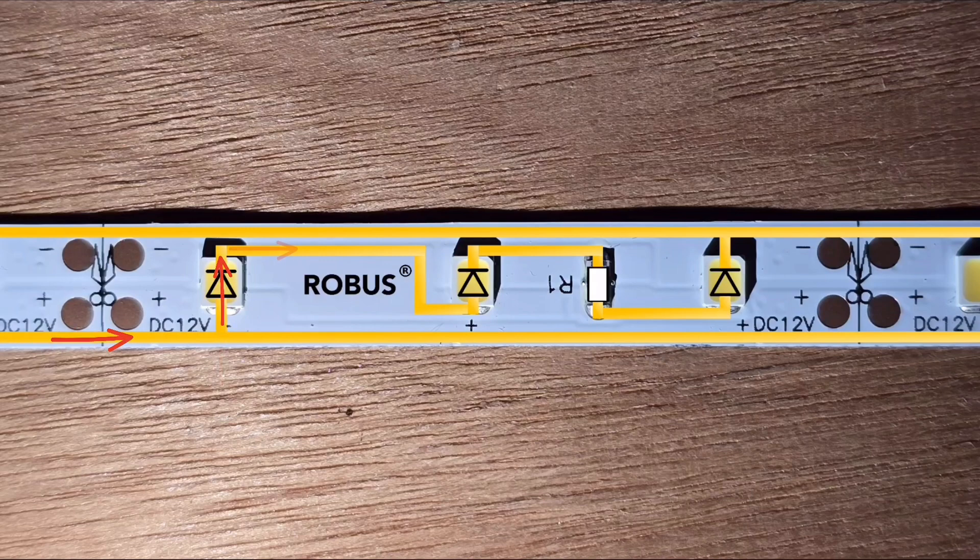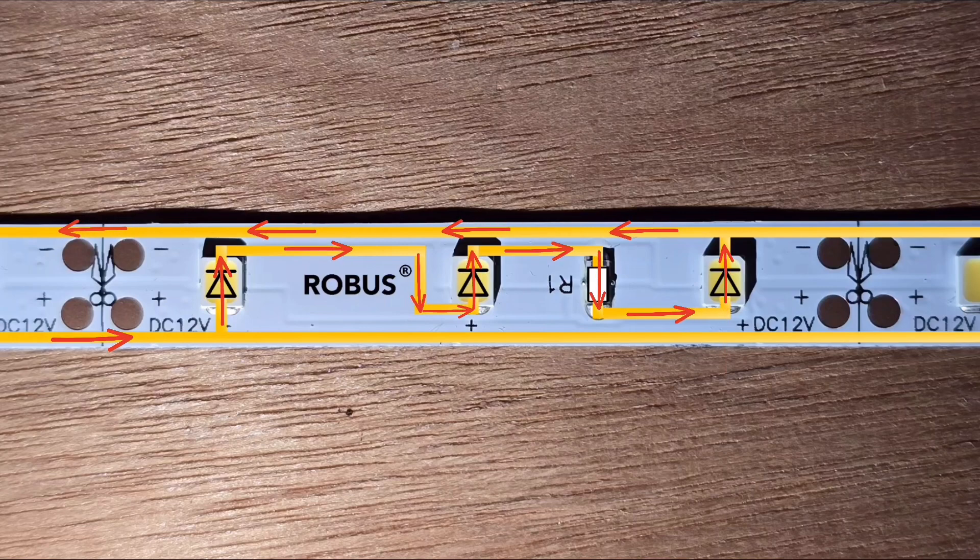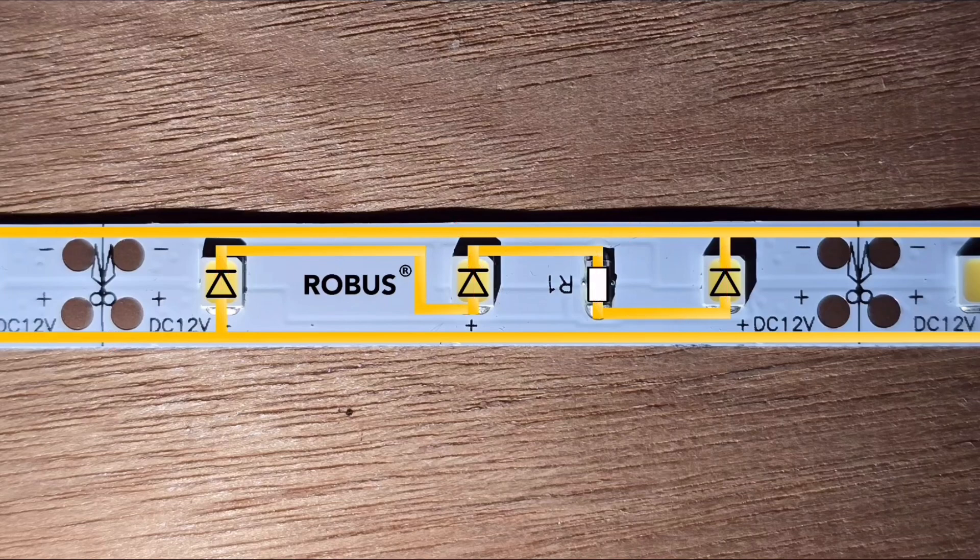If you trace the path the current takes through there, you can see that the current has to pass through each of the components in turn in order to flow, which is pretty much the definition of a series circuit. So that's why we only need that one resistor. It's acting as a current limiter for all three of the LED units because all four components are wired in series with each other. Clever stuff.